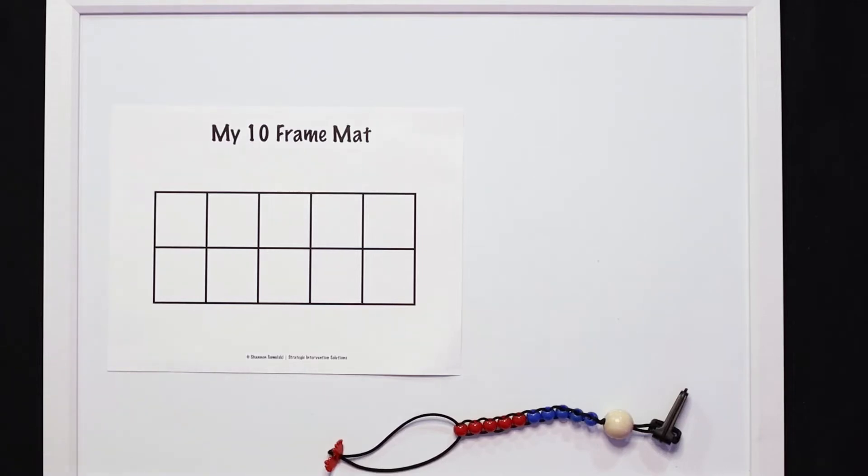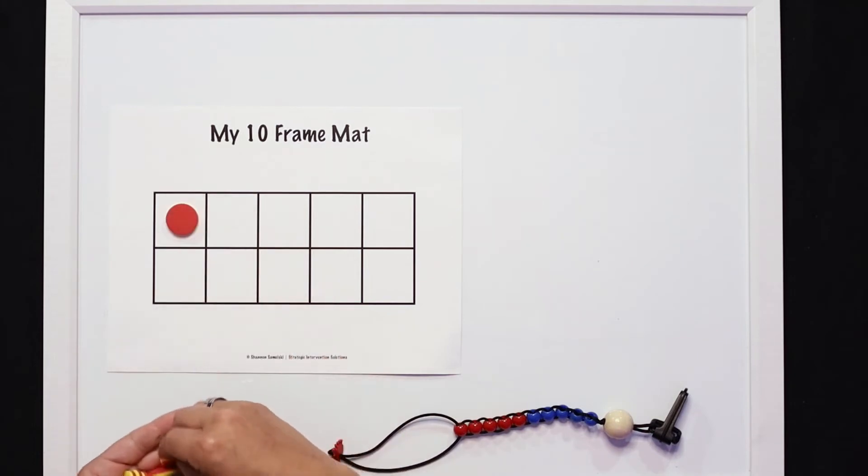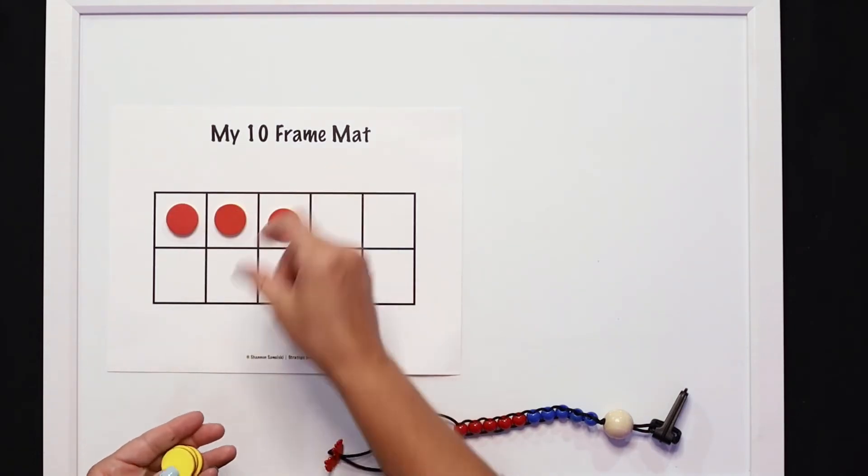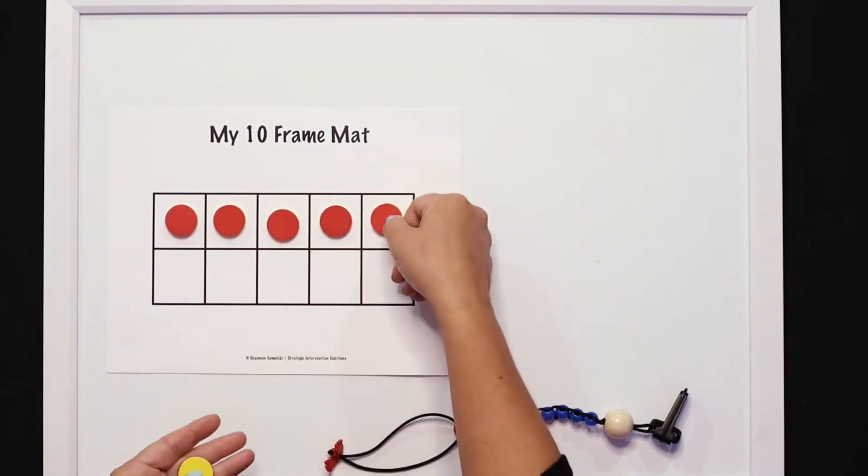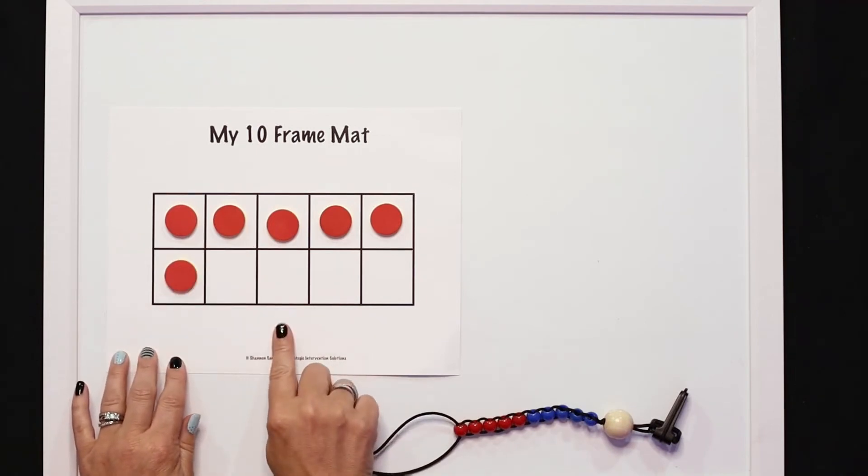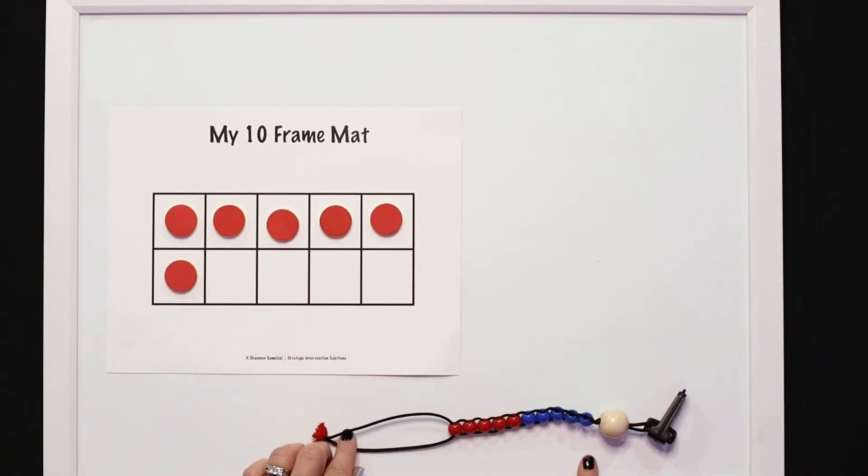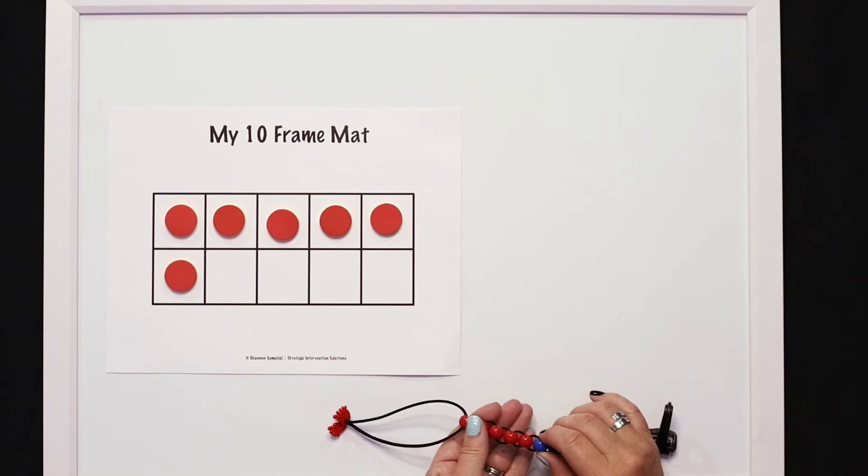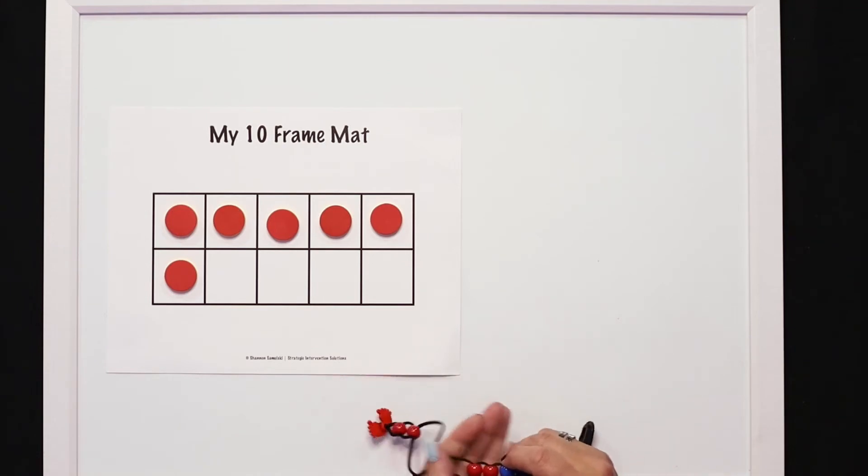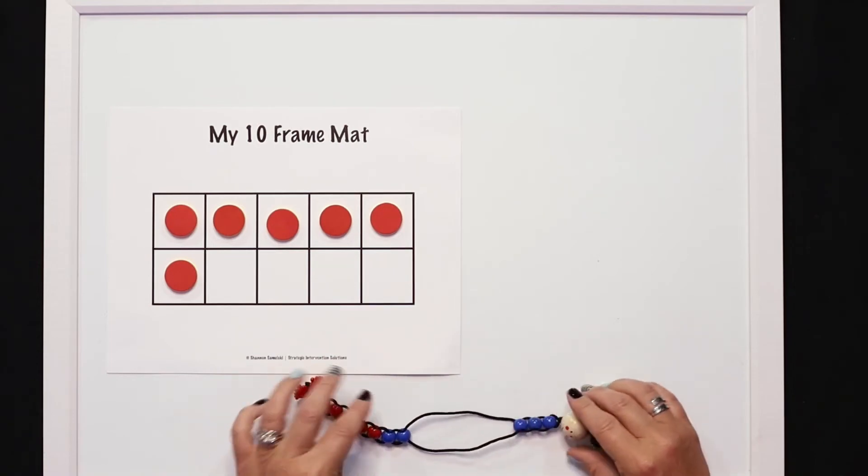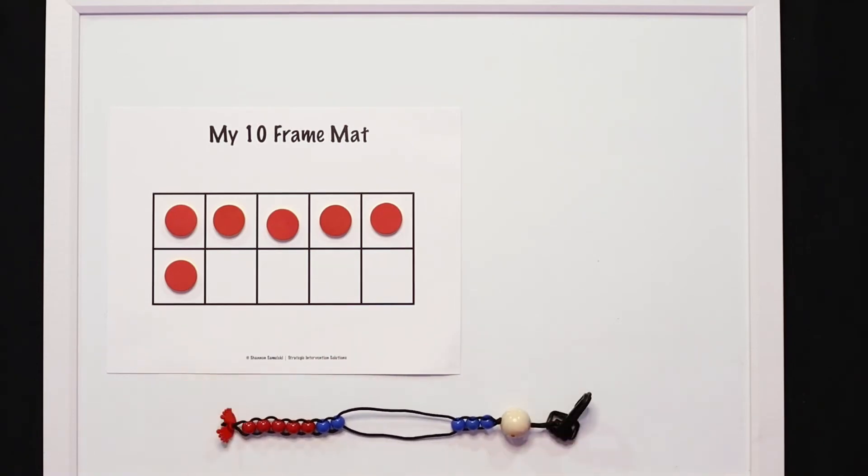Sunshine said that on his 10-frame, she noticed that he had six dots. And then she said she noticed that on the counting buddy, it had seven. One, two, three, four, five, six, seven. This is what Dodson had.